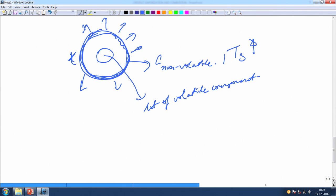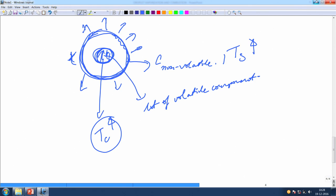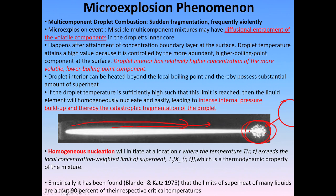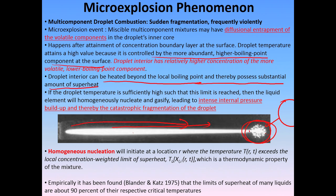Because of the presence of the non-volatile component at the surface in increased amounts, it leads to an increase in surface temperature — because the volatility is low, the surface temperature goes up. As the surface temperature goes up, the volatile components trapped in the interior of the droplet also experience a temperature rise. This might exceed the boiling point of the volatile component, and the droplet temperature attains a higher value because it is controlled by the higher boiling point, less volatile component. The droplet is heated beyond the local boiling point, providing a substantial amount of superheat — the centre, which still contains the volatile component, is now raised above its boiling point.